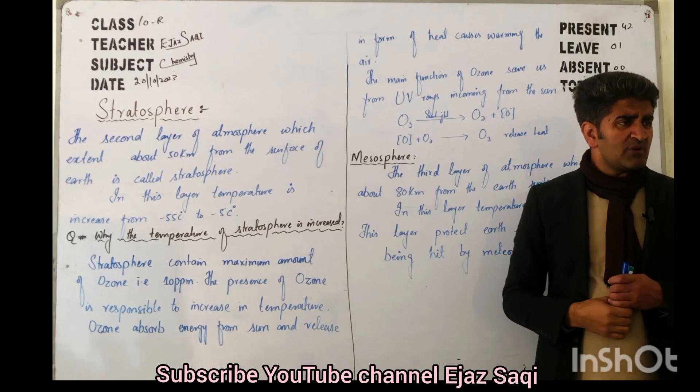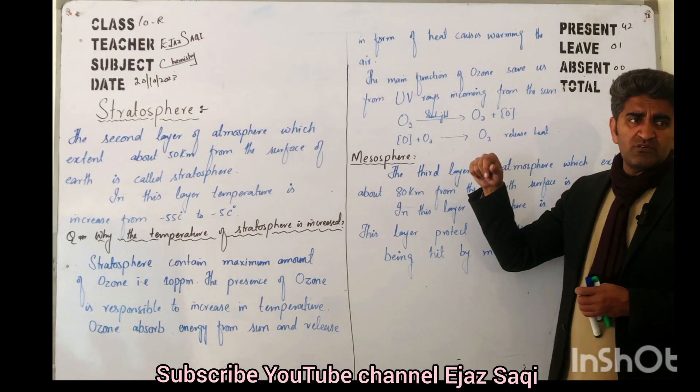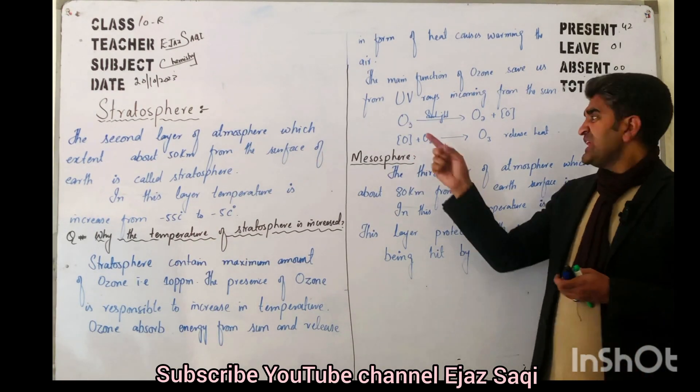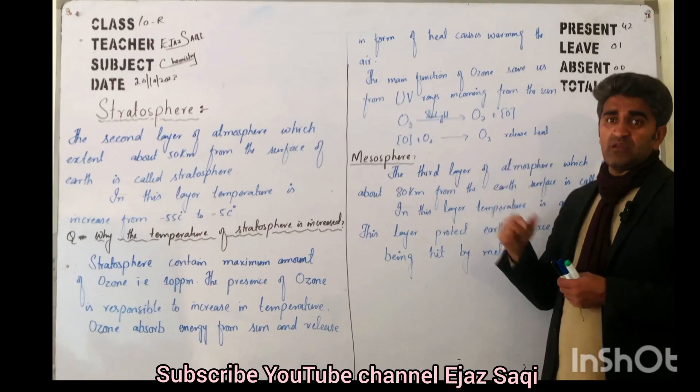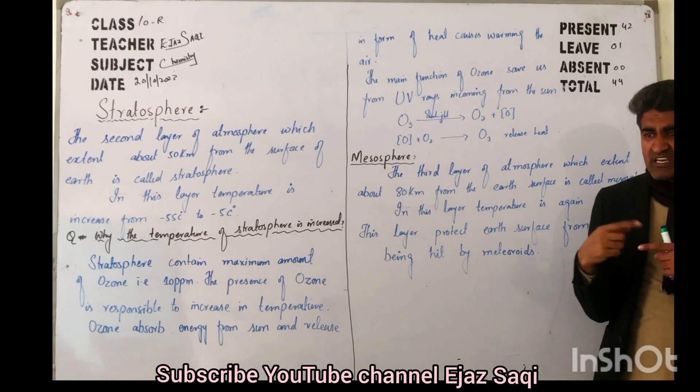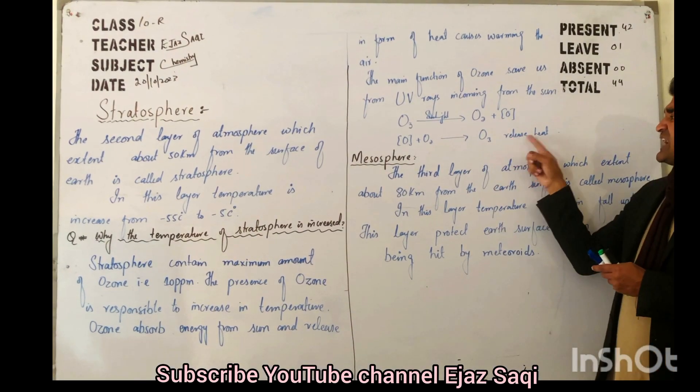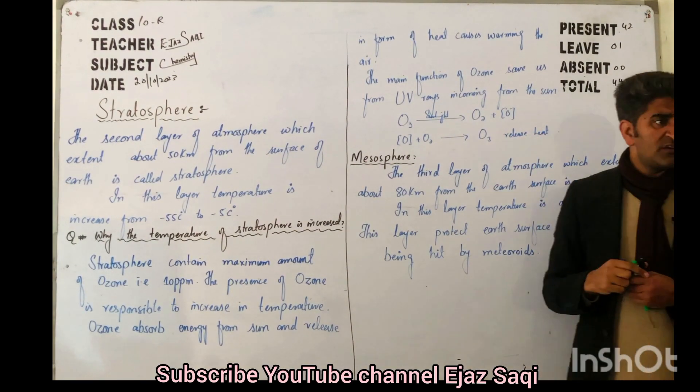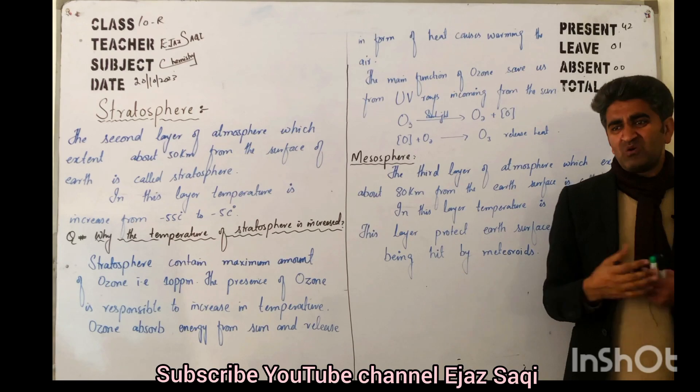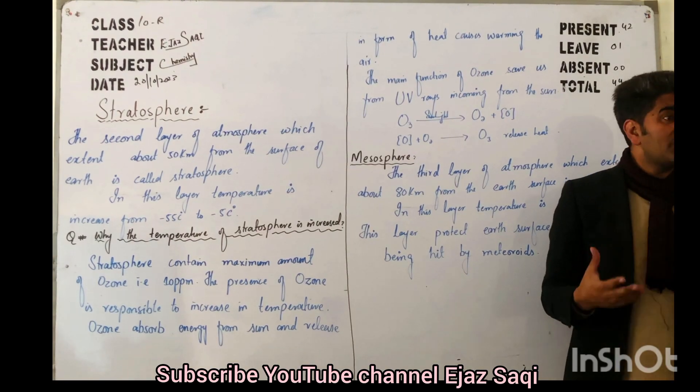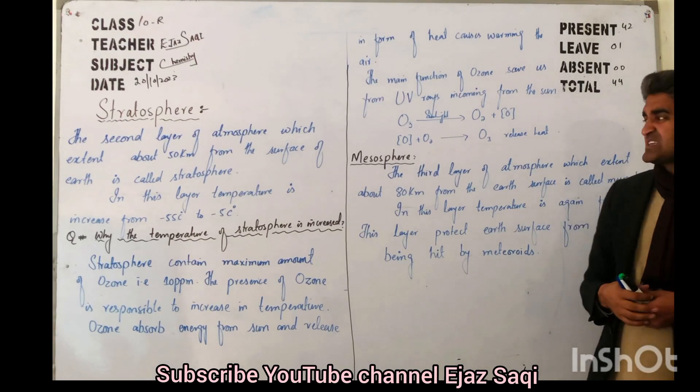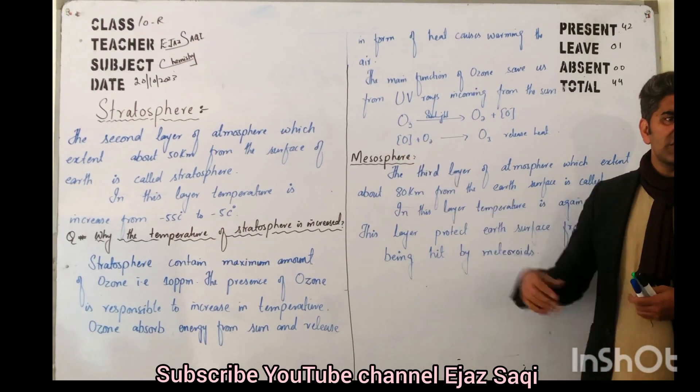Then what happens? The reaction is reversible, so what will it do? These two will again combine with each other. After combining, they form in the form of heat. When energy is released in the form of heat, then your atmosphere gets warm, heats up, becomes warm. So the gas becomes warm, so in that situation this temperature increases significantly.